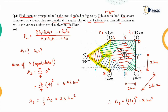Next, we calculate the areas A2 and A3. Both of these areas are equal. A2 = A3 = ½ × 2 × 2 = 2 square kilometers each.